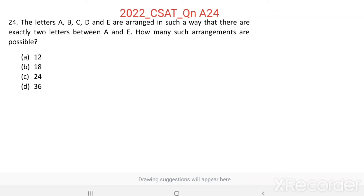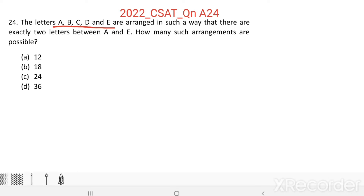Question number 24. The letters A, B, C, D and E are arranged in such a way that there are exactly two letters between A and E. How many such arrangements are possible?